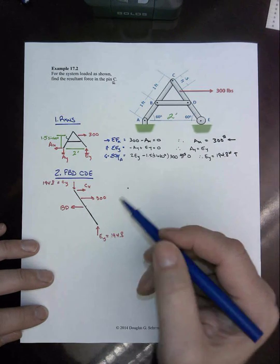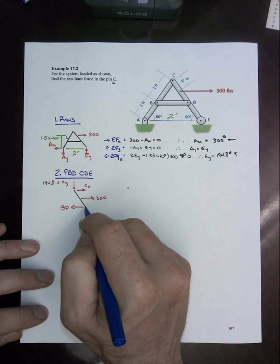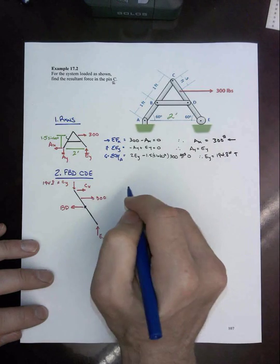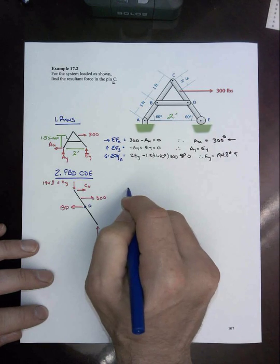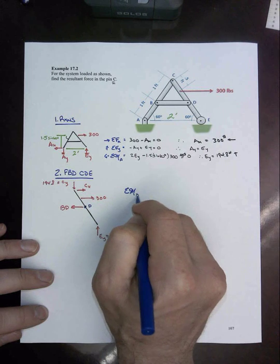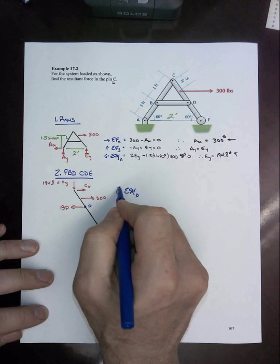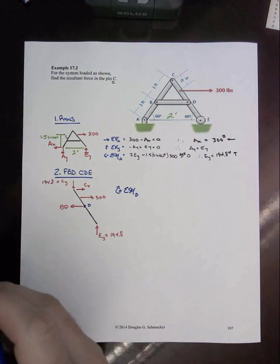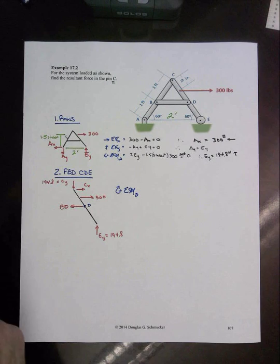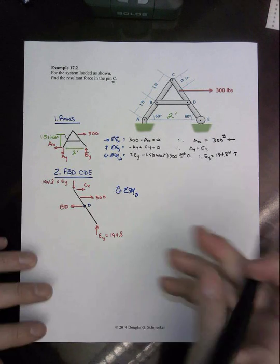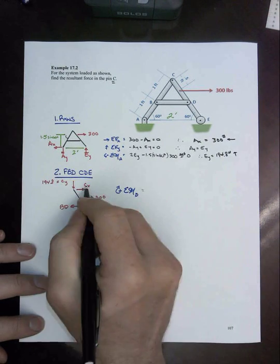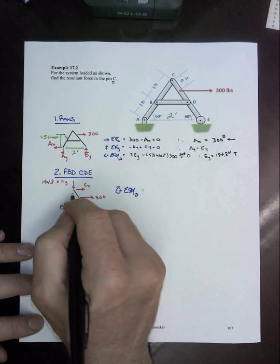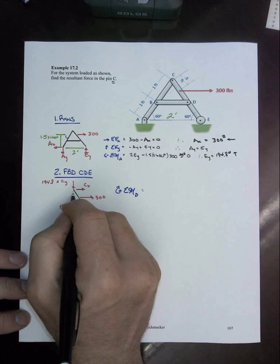But we can sum moments about point D. And let's take clockwise positive and just work our way around the entire system. We've got our CX value right here, its moment arm. Well let's see, we're going to be working with a lot of these things here. Let's just draw a little triangle in. There's our 60 degrees and this whole distance from C to D is one.